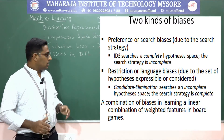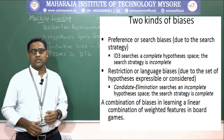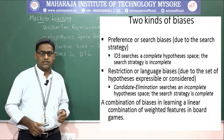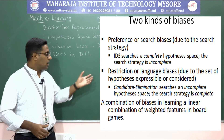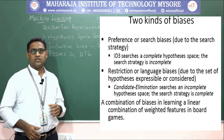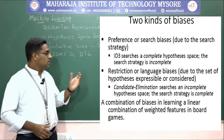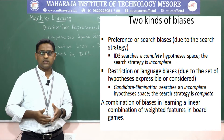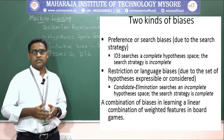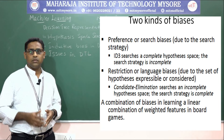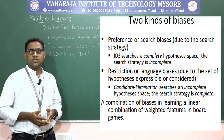There are two kinds of biases. The first is preference or search bias, which is due to search strategy — where the ID3 algorithm searches a complete hypothesis space but the search strategy itself is incomplete. The second is restriction or language bias, which is due to the set of hypotheses that are expressible or considered.